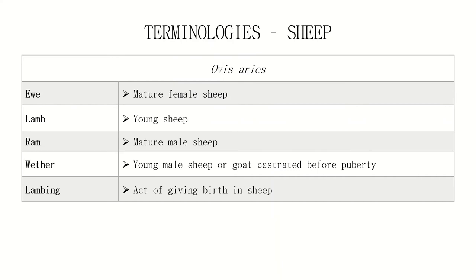Next are the terminologies for sheep, or Ovis aries. Ewe — remember, the pronunciation is 'you,' not 'ew' — is a mature female sheep. Lamb is a young sheep. Ram is a mature male sheep. Wether is a young male sheep or goat castrated before puberty. And lambing is the act of giving birth in sheep.